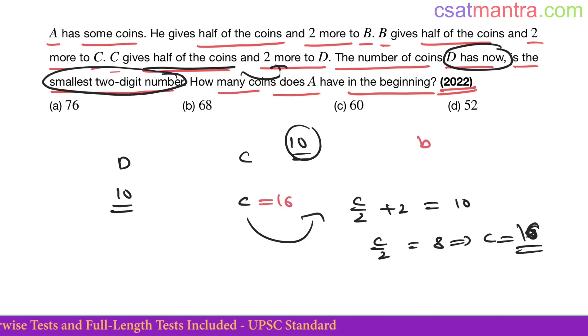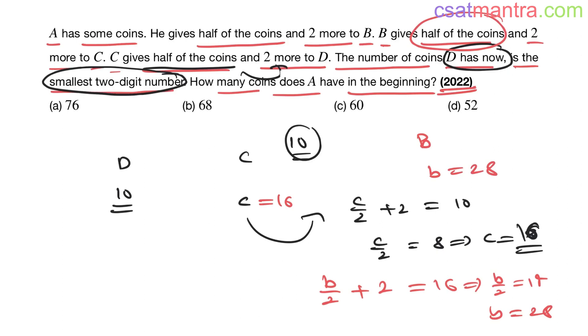Now say B has B number of coins. Half of B, B by 2 and two more. That is equal 16. So B by 2 is equal 14. B is equal 28. B has 28 coins.